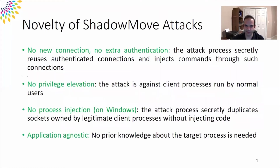Unlike the previous techniques, in ShadowMove no new connection is created and no extra authentication is performed. The core idea in ShadowMove is to reuse existing authenticated connections on the compromised system to perform lateral movement. To reuse the existing connections, ShadowMove does not require privilege elevation. Moreover, on Windows, it does not inject any code into legitimate processes. Last but not least, ShadowMove is application-agnostic in the sense that it does not need any prior knowledge about implementation details such as the memory layout of its target processes.